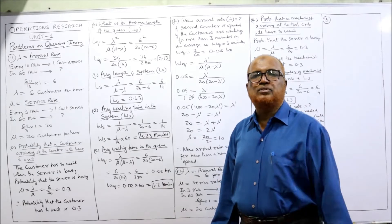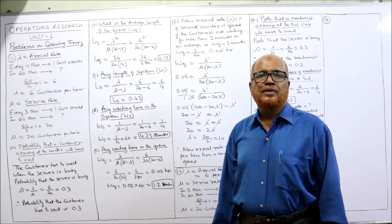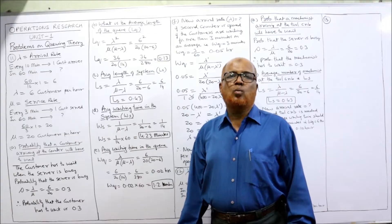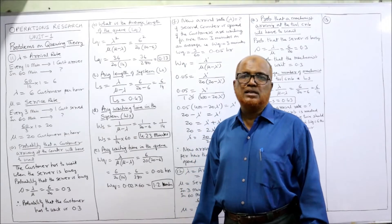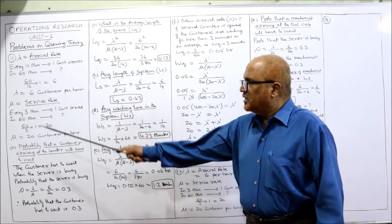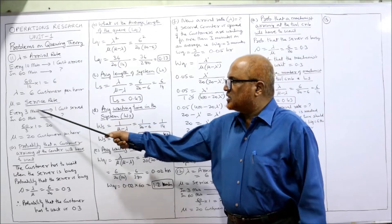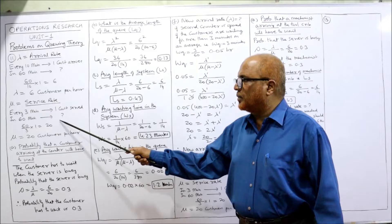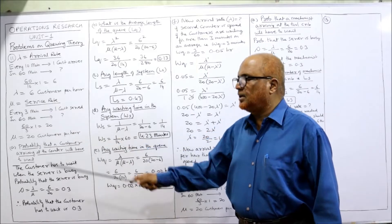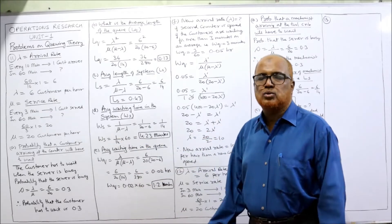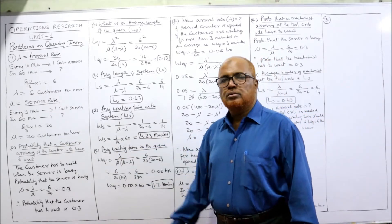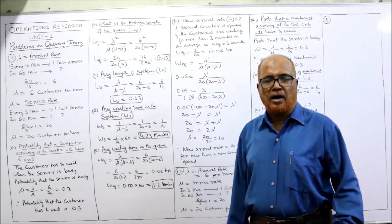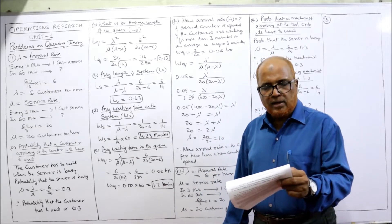The service time follows a Poisson distribution with a mean time of 3 minutes — so every 3 minutes one customer is served. In 60 minutes that is 60 divided by 3, which comes to 20. So mu equals 20 customers per hour.